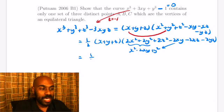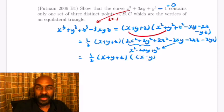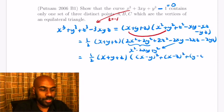And by symmetry we can do the same thing with xz and with yz. So we get a half times the quantity x plus y plus z multiplied by x minus y all squared plus x minus z all squared plus y minus z all squared.